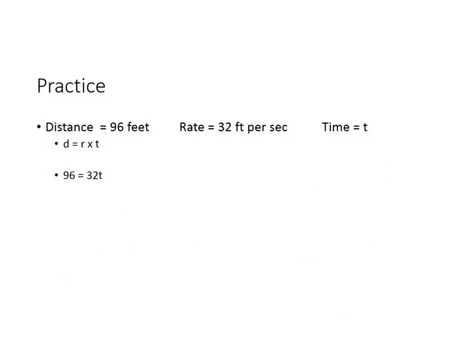Let's try it again. This time our basic information: we know the distance is 96 feet, we know the rate is 32 feet per second, but we don't know the time. Now if we plug these into our equation of distance equals rate times time, we get 96 is equal to 32 times t.